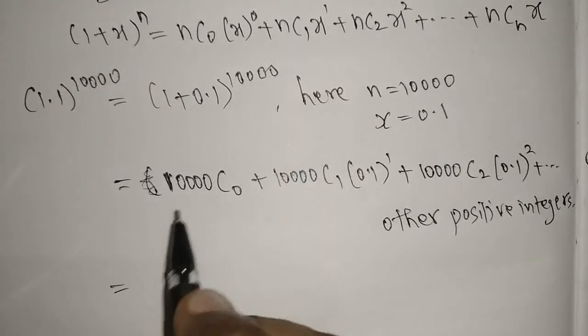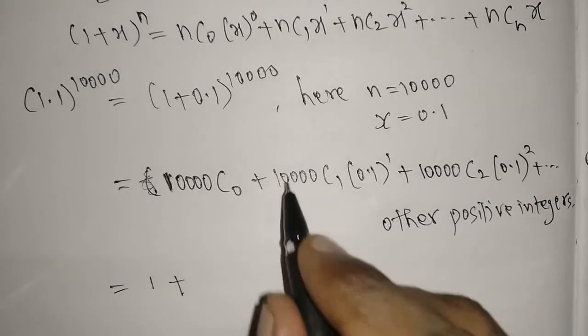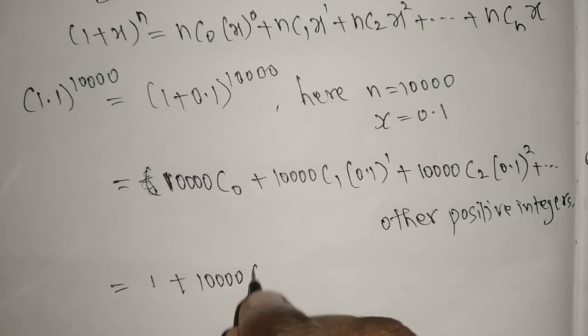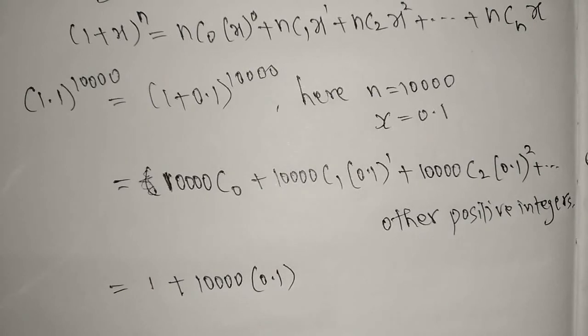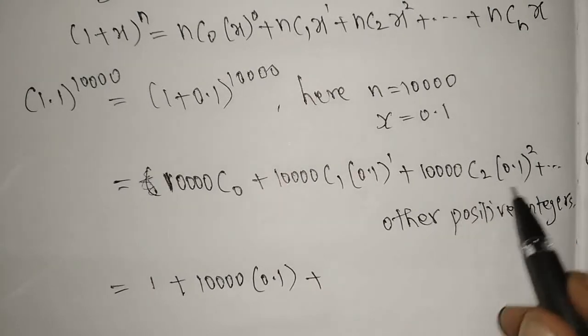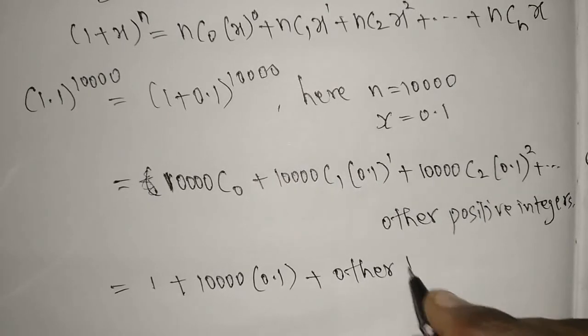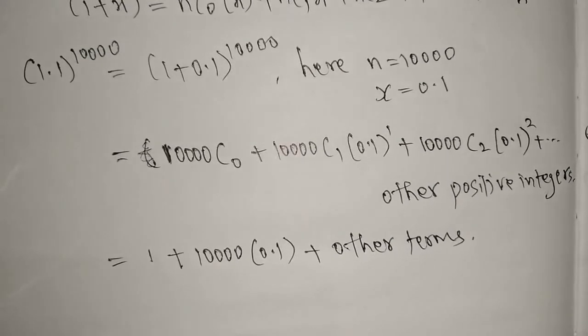Plus I'm writing, and this also some other terms, plus other terms. Now because here itself you will get above 1000. So 1 plus 0.1 times 10000, here you will get 1000 because the point after we have one digit, so that one zero will go.